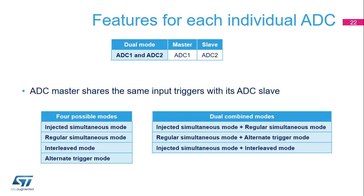The STM32L5 embeds two ADCs. ADC1 and ADC2 can be configured to work together in dual mode so that each analog to digital conversion can be synchronized between the two modules. Four possible dual ADC modes are implemented: injected simultaneous mode, regular simultaneous mode, interleaved mode, and alternate trigger mode. It is also possible to use these modes combined in the following ways: injected simultaneous mode plus regular simultaneous mode, regular simultaneous mode plus alternate trigger mode, and injected simultaneous mode plus interleaved mode.